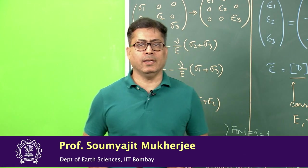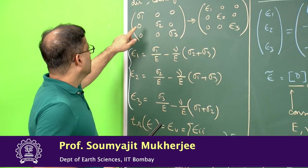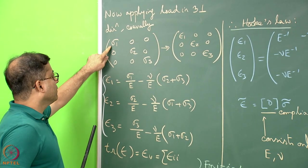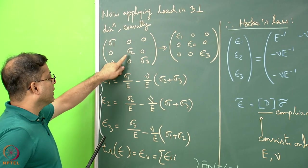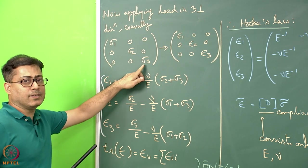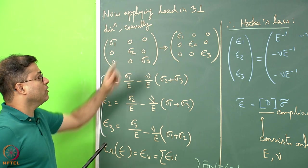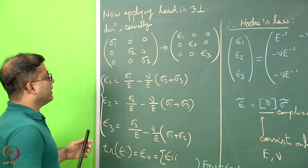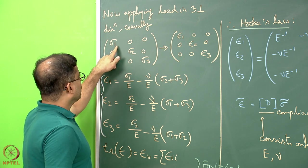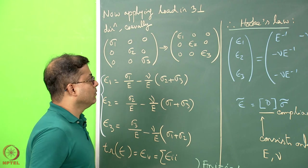We are going to apply a triaxial stress regime on the cube. Here sigma 11 is given by sigma 1, sigma 22 is given by sigma 2, sigma 33 is given by sigma 3, and no shear stresses are applied on the cube. So we will expect that due to the application of only normal stress, only normal strains will be produced.